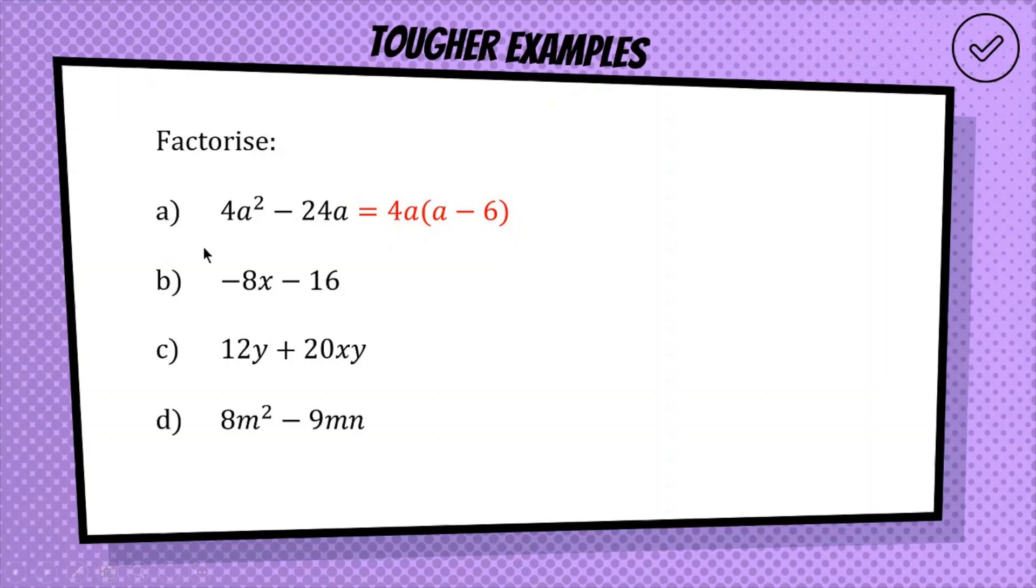For the next one, we have a common factor. Hopefully, you can see that there's a common factor of 8, because this is 8 times x, and this is 8 times 2. But we can also take the negative out the front, because there's a negative in both. So if you wanted to, you could take negative 8 out the front. What would be left over here is the x, and the tricky part is that what's left here is now positive.